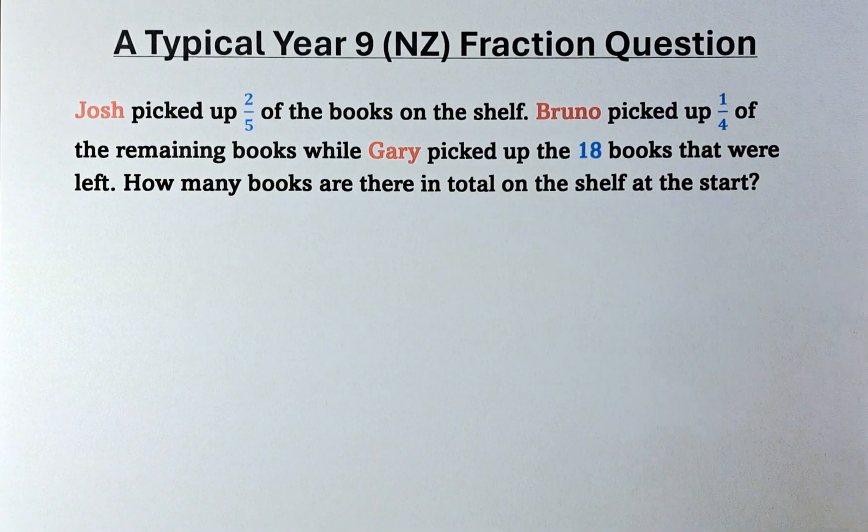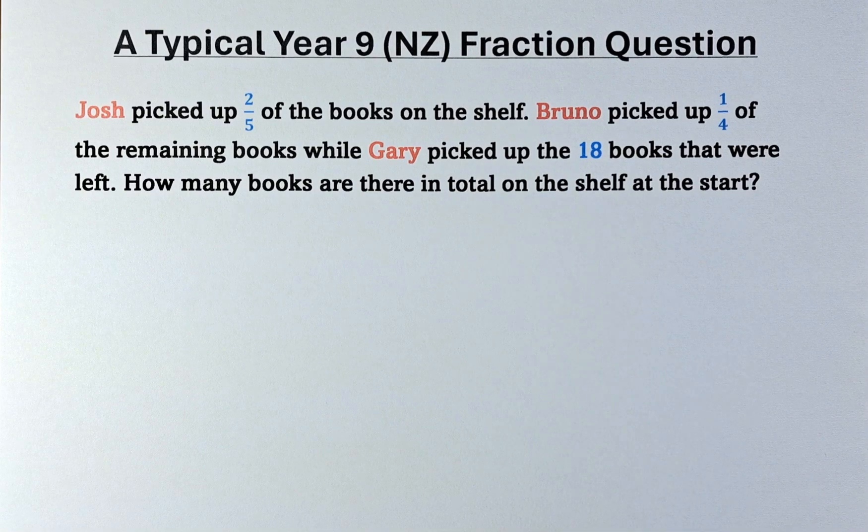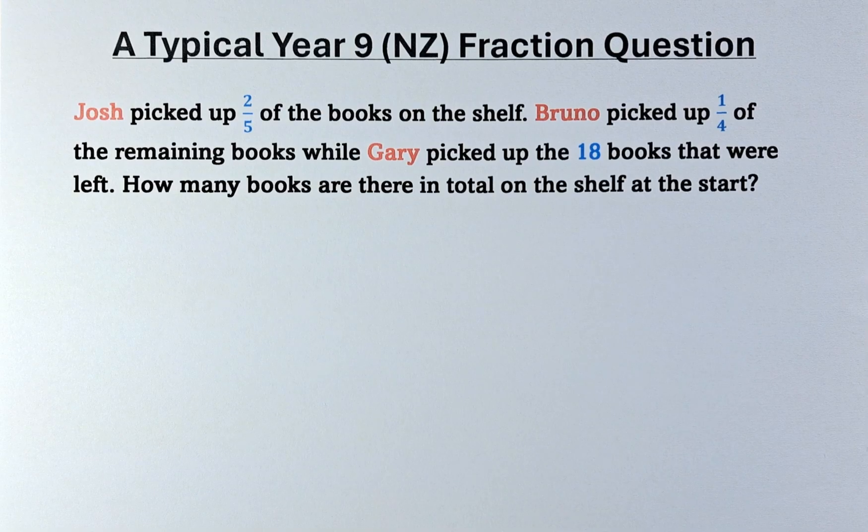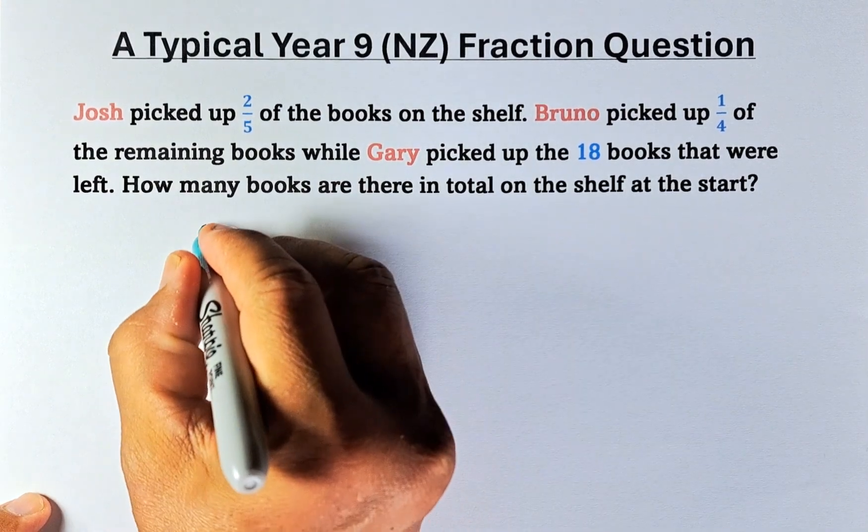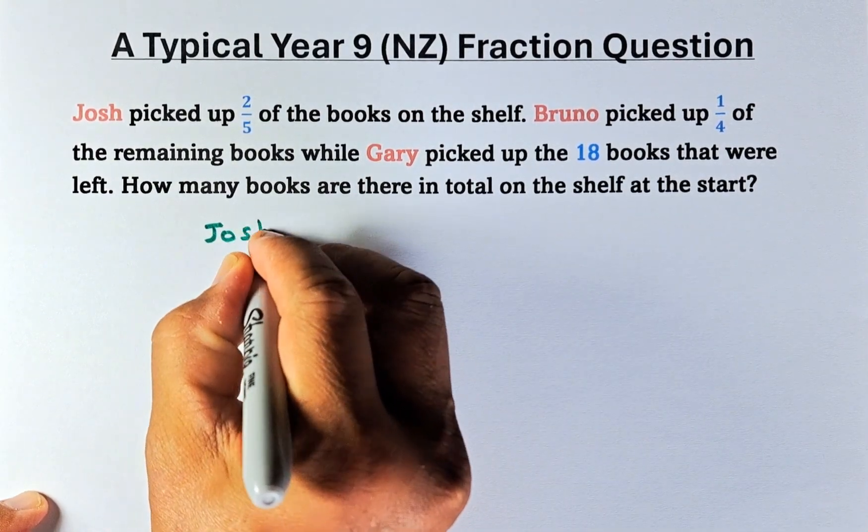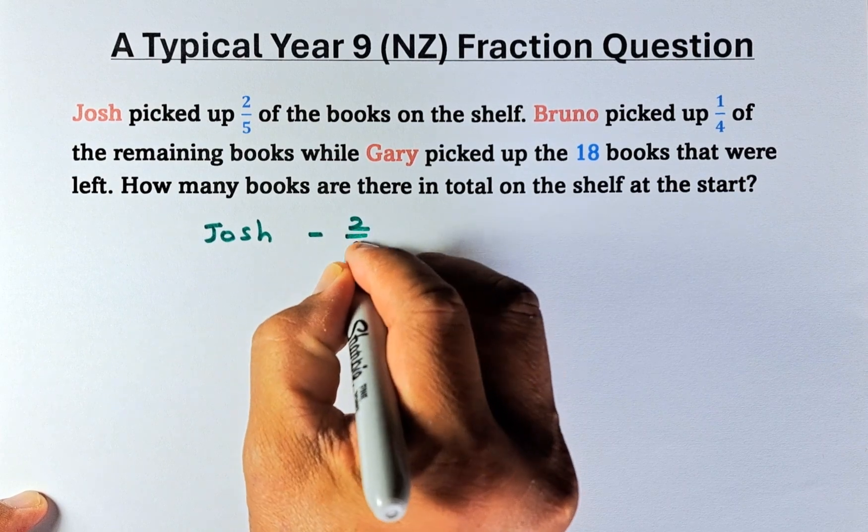So without further ado, we are going to break the question into Josh, Bruno and Gary and how many that they pick up on each of the books from the shelf. So Josh picked up two-fifths. Josh, look at it right here. Josh, he picked up two-fifths of the books.